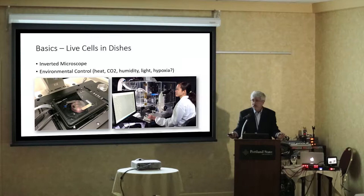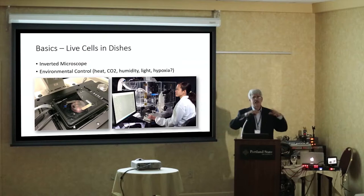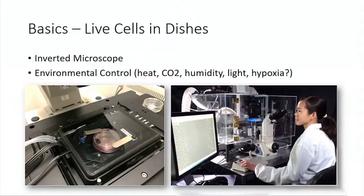Environmental controls come in basically two flavors: a stage-top control, and one that encloses the entire microscope. The basic things we're looking for are heat control, CO2 control, humidity, and light. Occasionally we have people doing hypoxic experiments where you're lowering oxygen levels, and for that I really need the enclosed one which can push out oxygen with nitrogen. Depending on what you need to do, you might use one or the other.